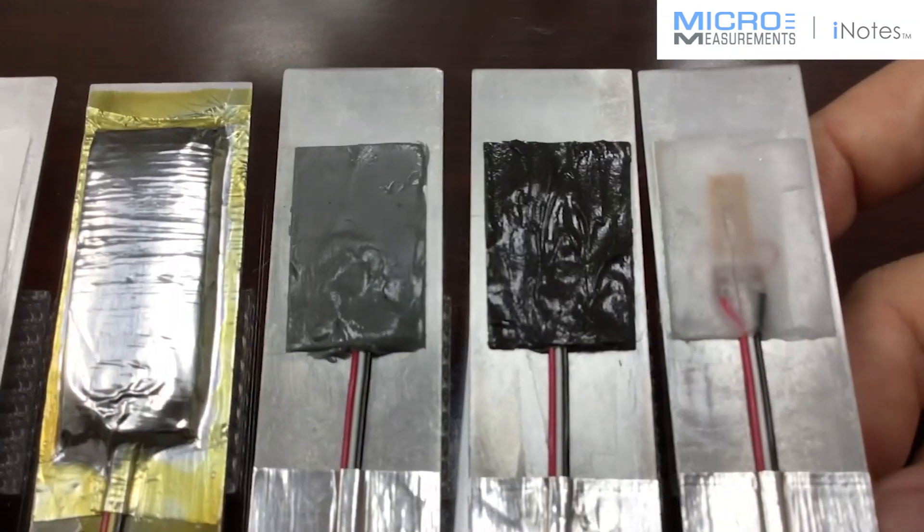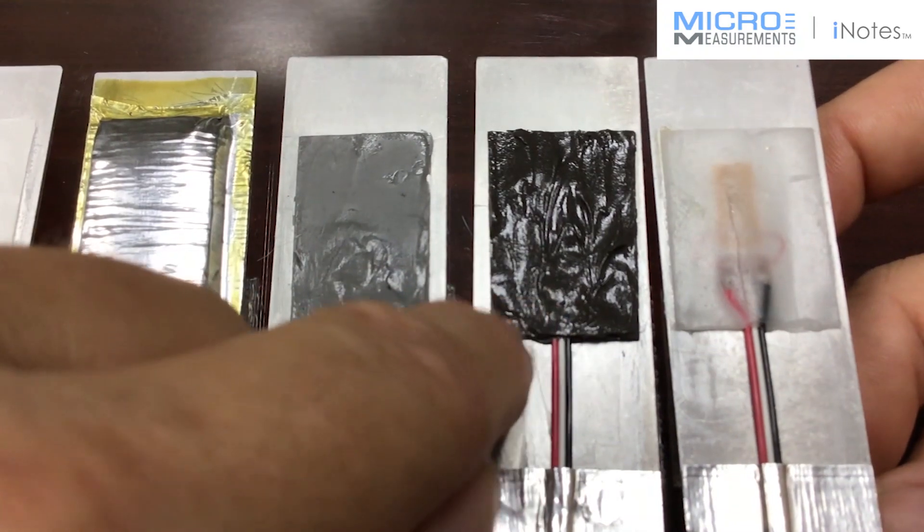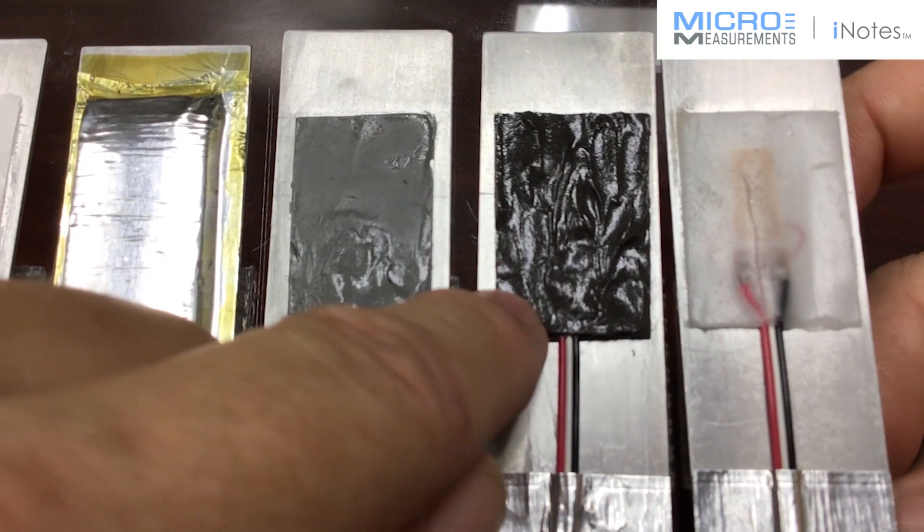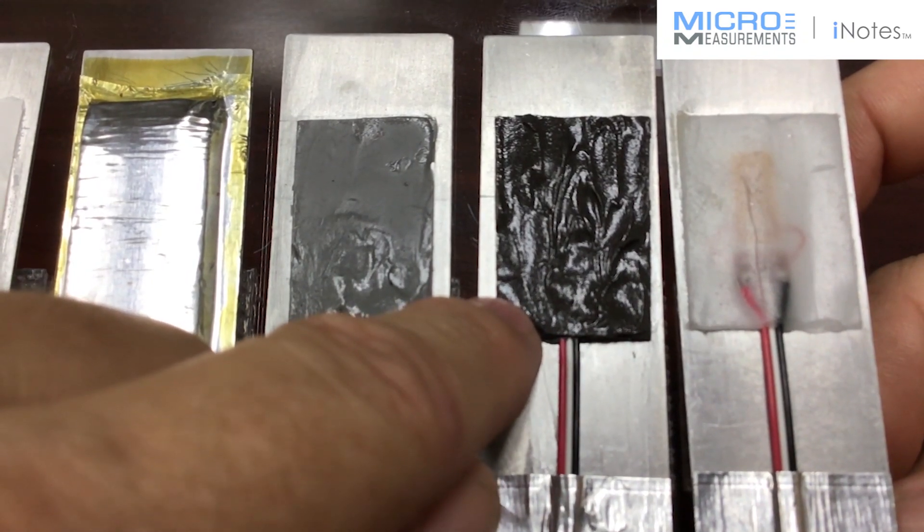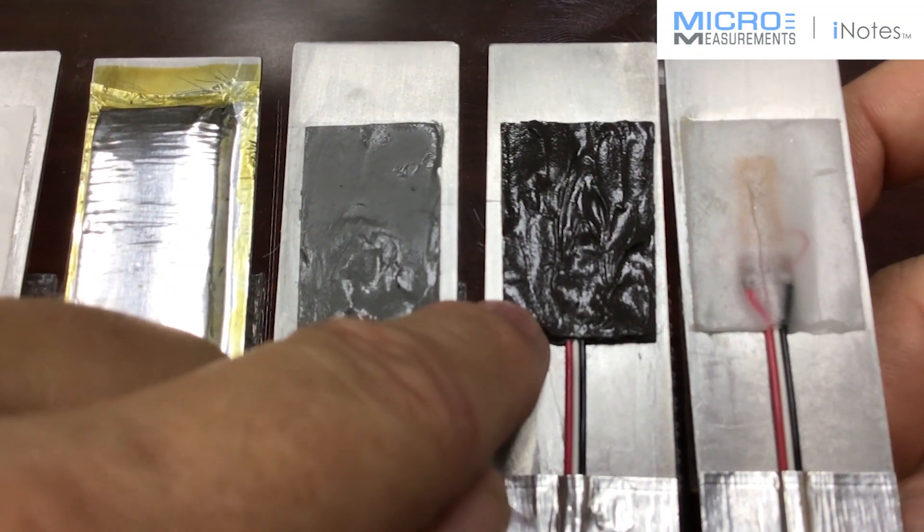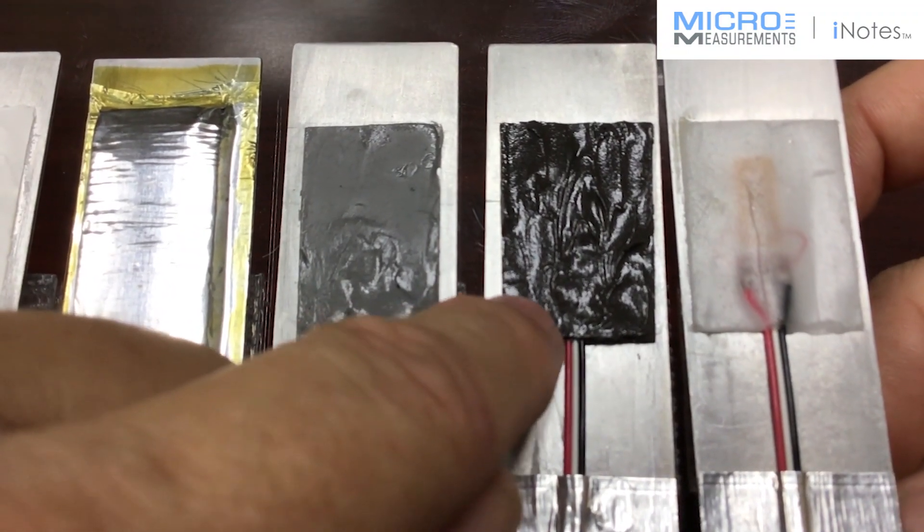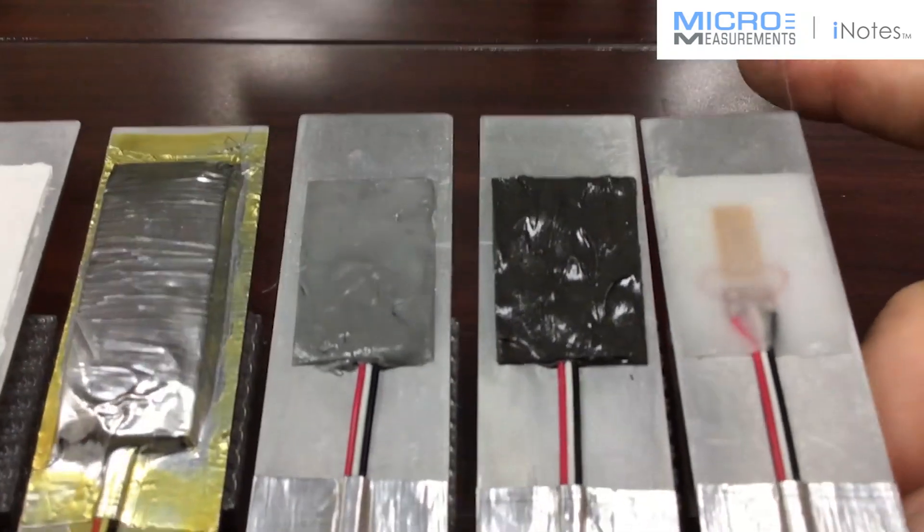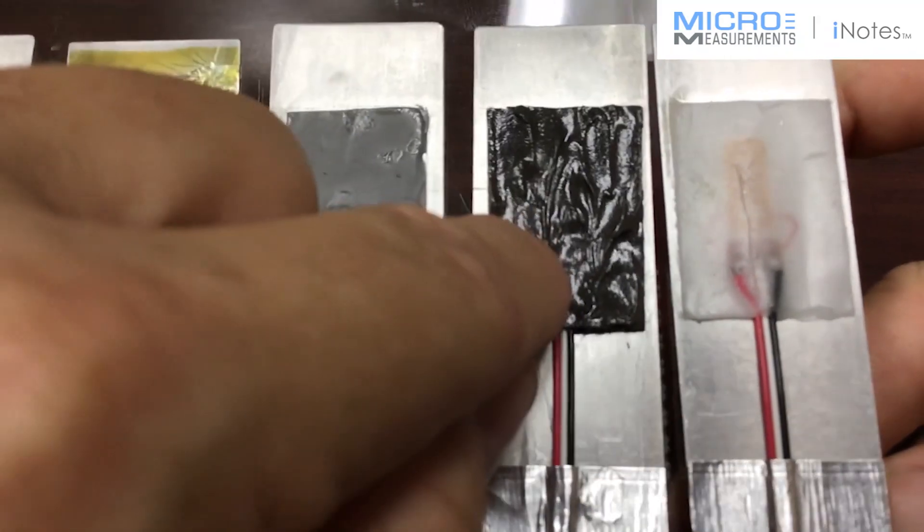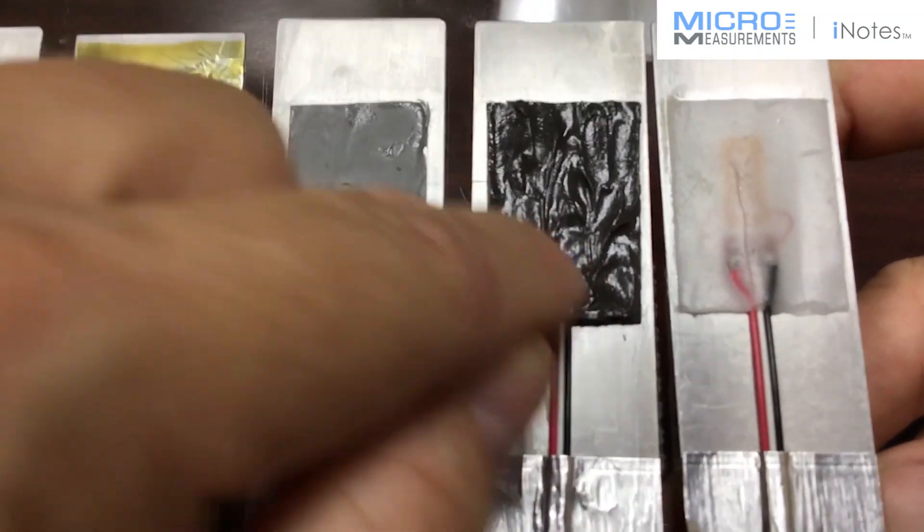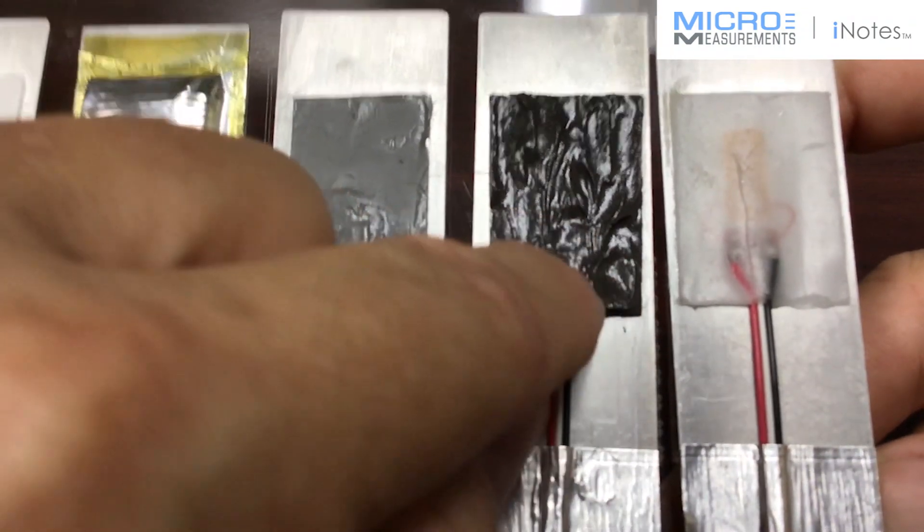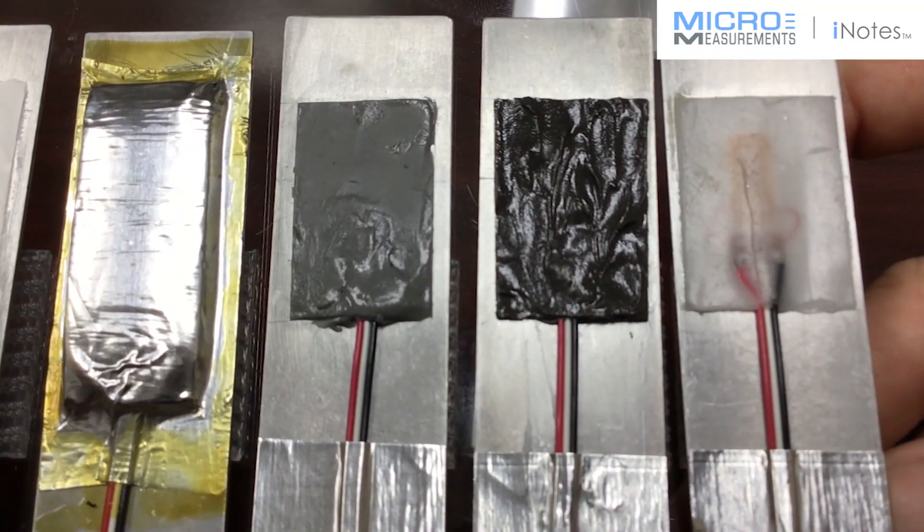And then the next one, this one kind of looks like dark chocolate. This is a two-part polysulfide material we call it M-Coat-JA. It's used out in industry as a fuel tank sealant. It turns out it also makes a very good environmental coating for strain gauges. It's a very tough material. It has the kind of consistency about like the tread on a shoe or maybe a tire. A really tough environmental coating system for strain gauges.